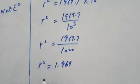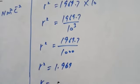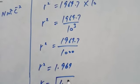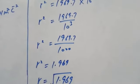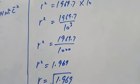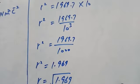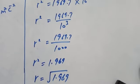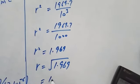Taking square root on both sides: r = √1.969. The square root of 1.969 comes out to be 1.4.